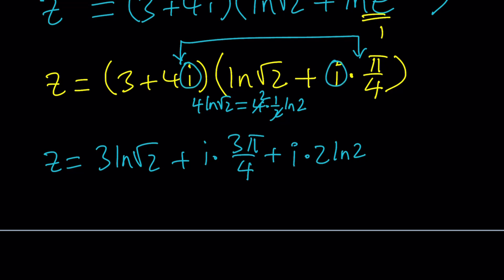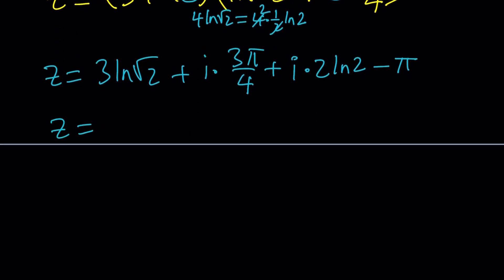And then finally, we're going to multiply the imaginary parts, which is going to give us i squared. And as you know, hopefully you do, i squared is equal to negative 1. And that's going to give us negative pi. Because what happens is 4 goes into 4. Let's go ahead and simplify this even more. So we can go ahead and write this as 3 ln root 2 minus pi. And then we're going to put together these imaginary parts, 3 pi over 4. I'm going to write 2 ln 2 plus 3 pi over 4, and all of that is actually multiplied by i.